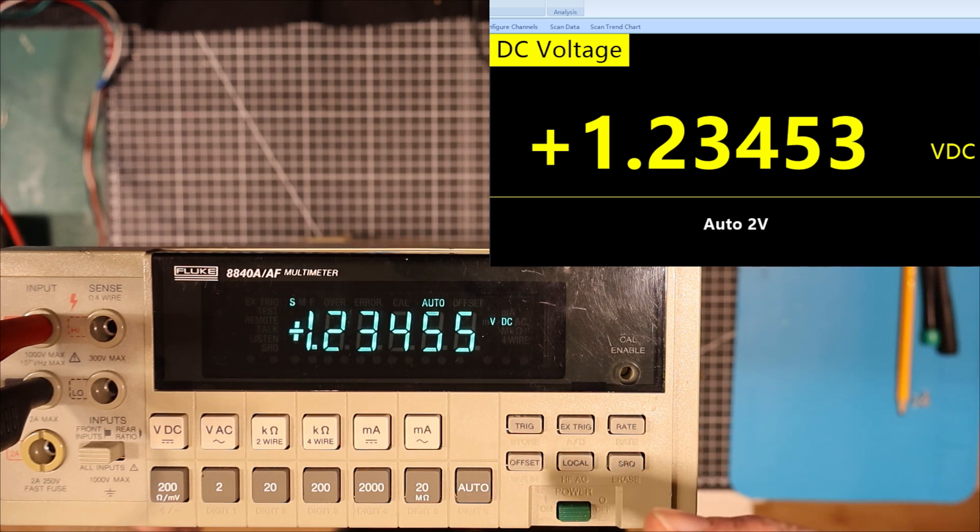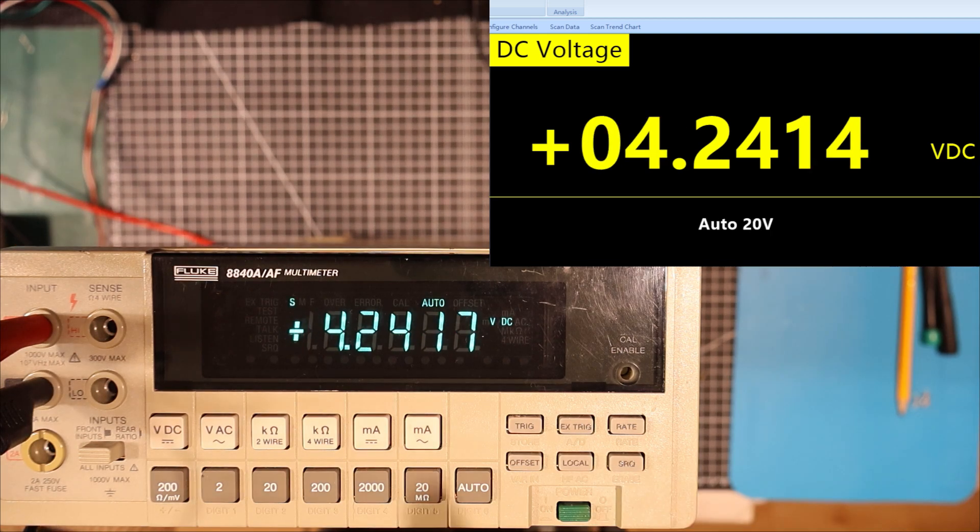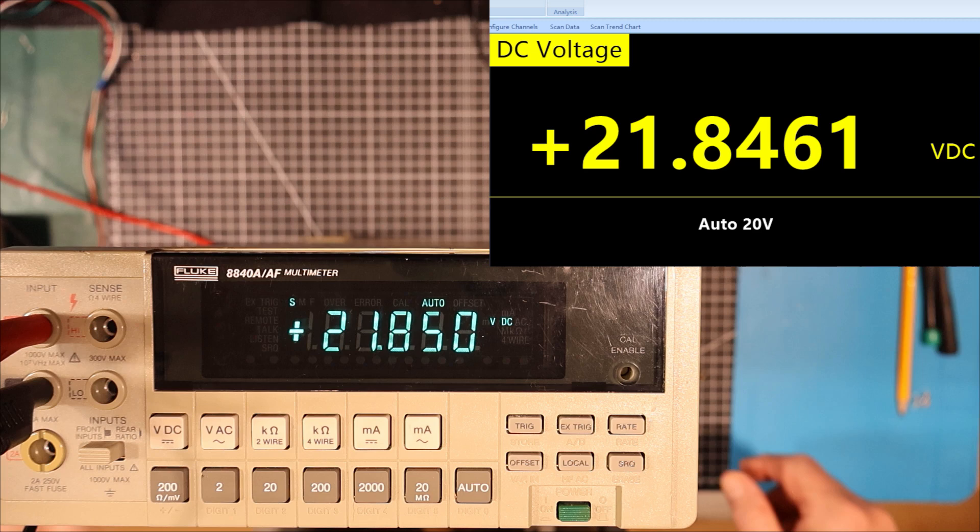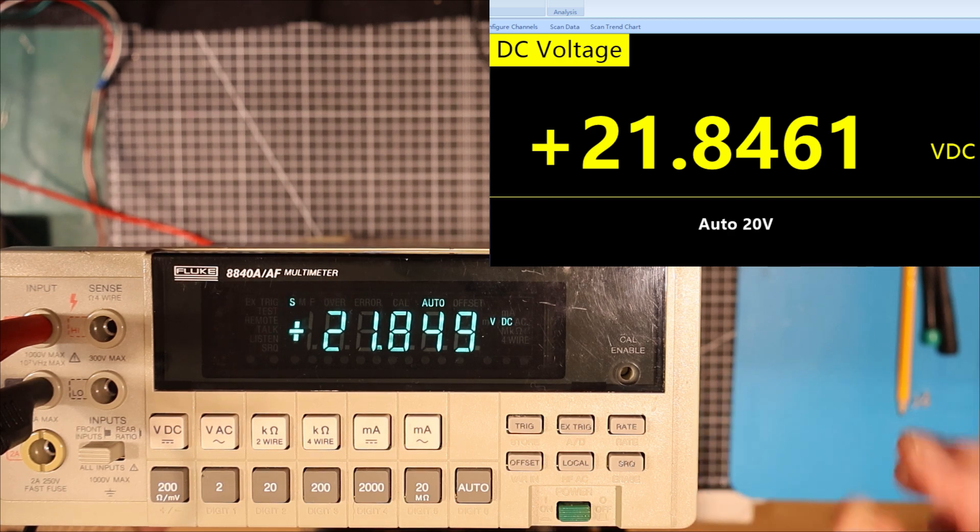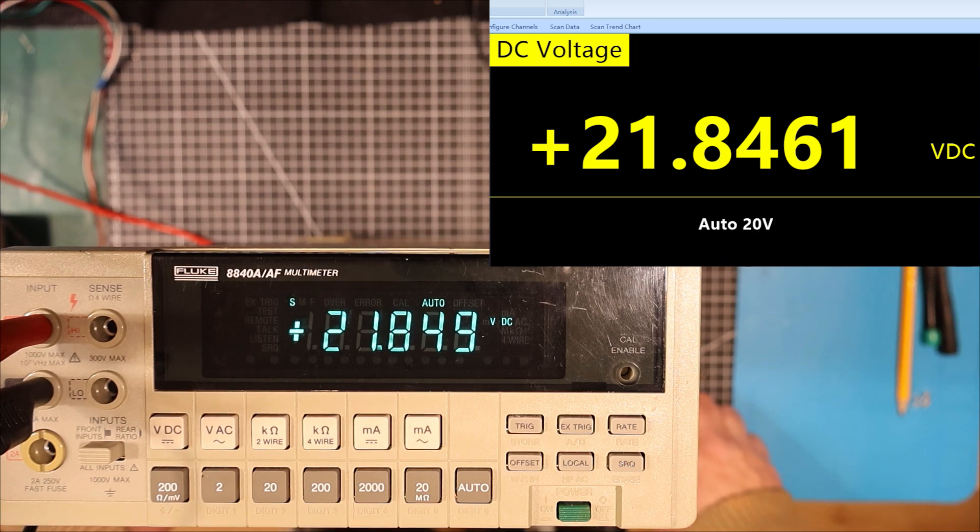So let's try a slightly higher voltage here. That gets us up into the next range. And it's the same for both of these. They're both 200,000 count meters. And we can see here again we're off by about three counts or so. So that's perfectly fine. Let's bring it up into the next higher range. All right, 21.850 and the Signalent is saying 461. So yeah, the Signalent is actually showing a little bit more precision here. But within the precision displayed, this is off by maybe three counts again. Not bad for a hundred dollar meter.